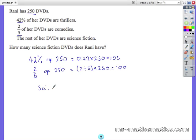So for those which are sci-fi, that would be whatever is left over from 250 when you take away 105 and 100, so that would be 45 sci-fi DVDs.